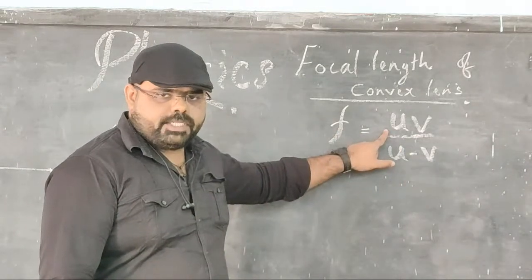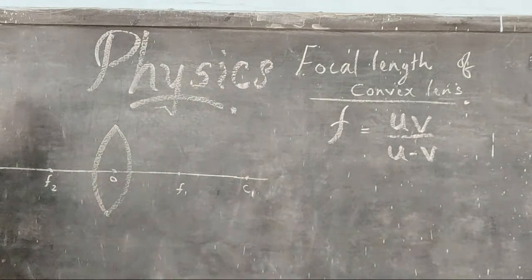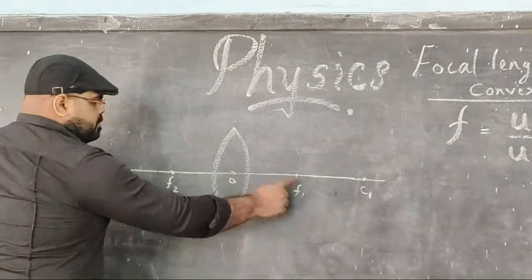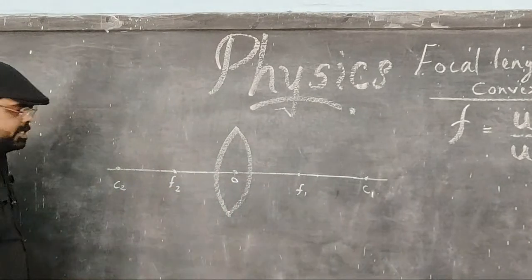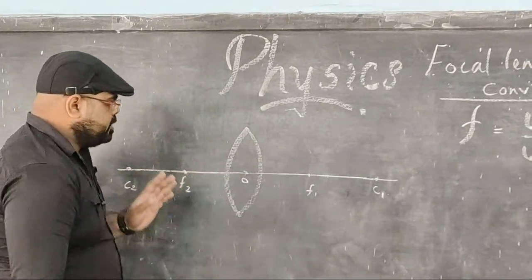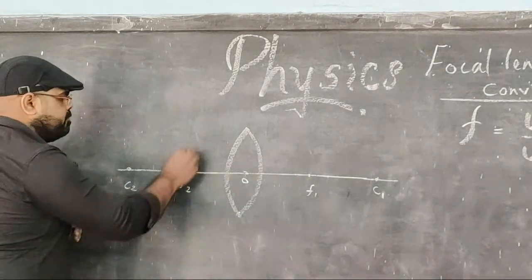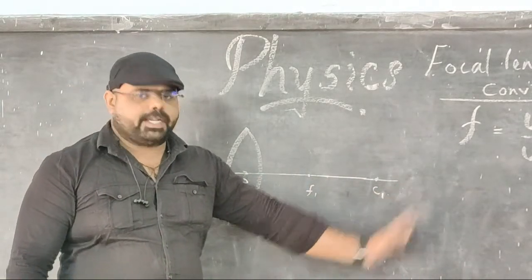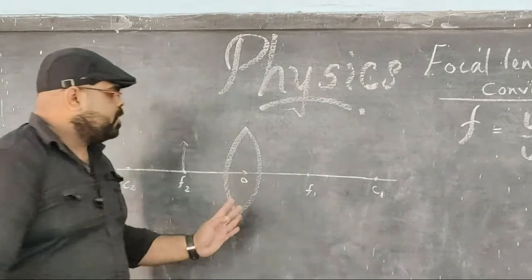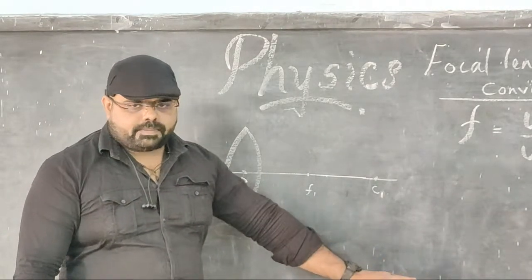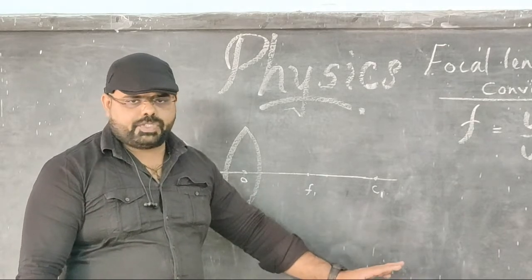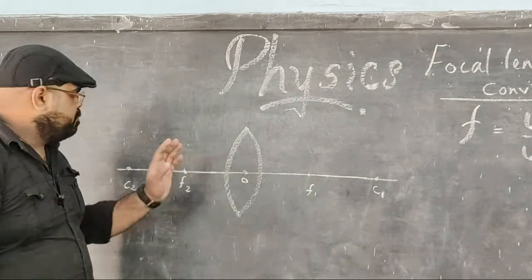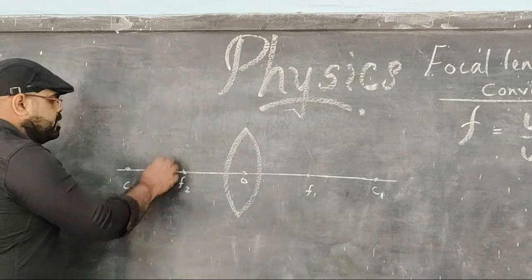Here U is the object distance and V is the image distance, as shown in the figure. This is the convex lens in the diagram. We have the focal point and the center of curvature positions marked. When you place the object at the focus, the image forms at infinity, which makes it very difficult to locate the real image.